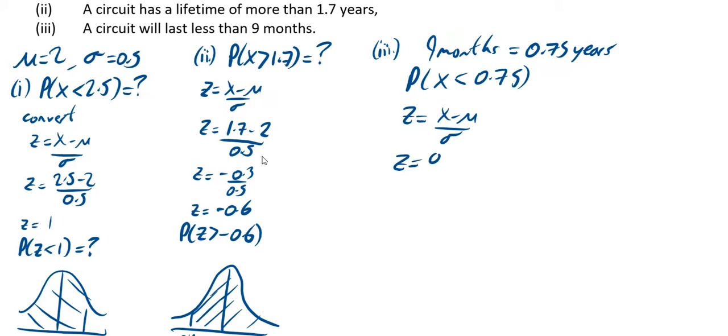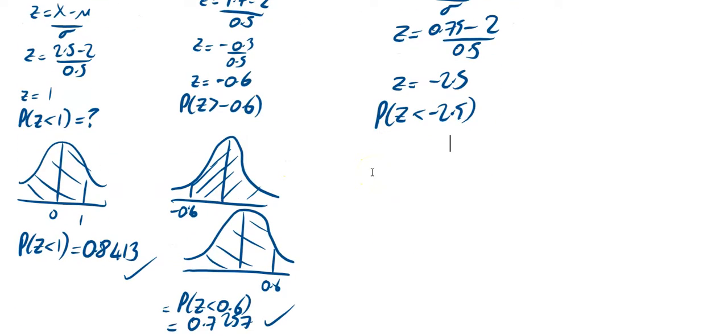Z equals X minus μ over σ. Z equals 0.75 minus our μ. Just check your μ is 2 and your σ is 0.5. So that means Z equals minus 2.5. So what we're looking for in this question really is Z is less than minus 2.5.